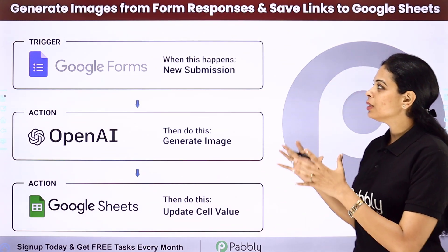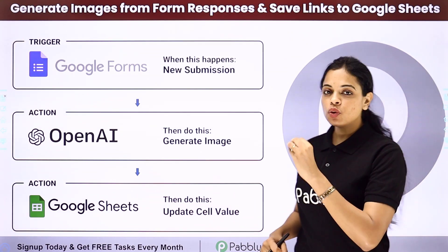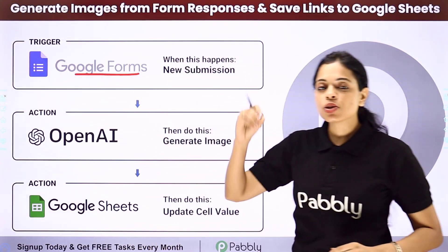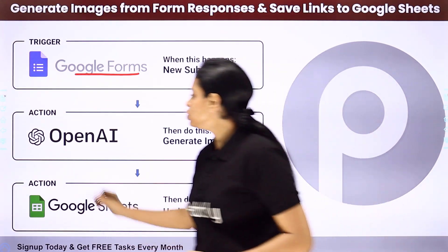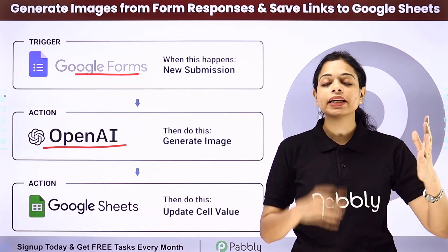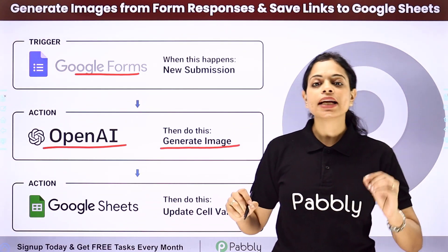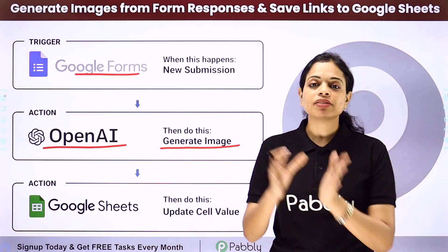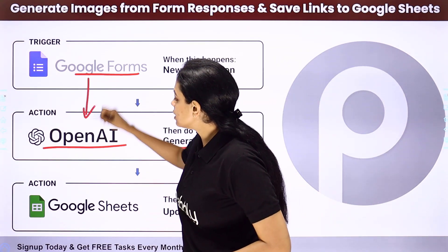In this video we are going to see how to generate images from form responses and save links to Google Sheets. Every time there is a new submission through any form builder application — here we have chosen Google Forms — with the response received you want to generate certain images using OpenAI, shorten the link with Bitly, and finally save it in your Google Sheet.